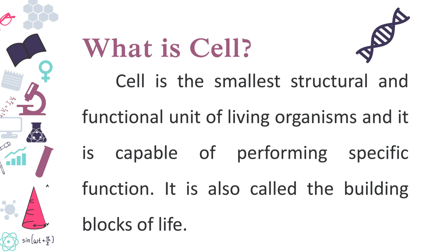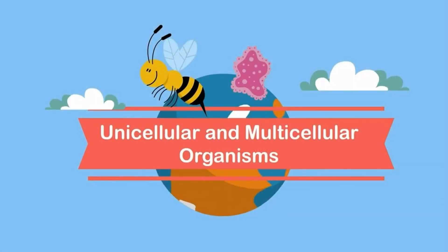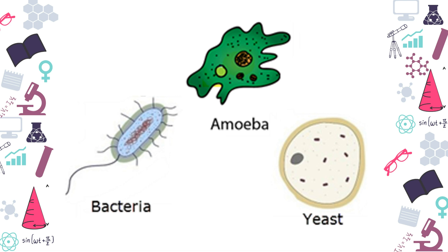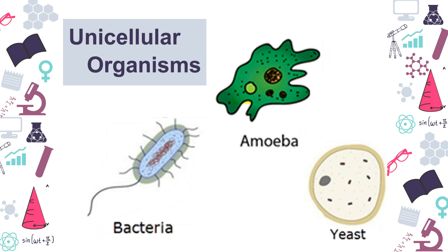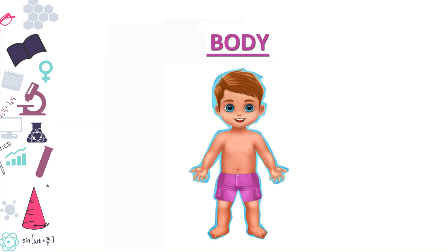According to the number of cells, we can classify organisms into two types: unicellular organisms and multicellular organisms. Some organisms like bacteria, yeast, and amoeba have a single-cell body and are called unicellular organisms. Organisms such as human beings, cows, and trees are made up of a large number of cells and are called multicellular organisms.